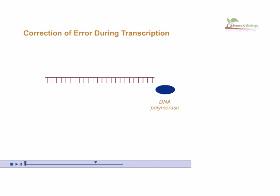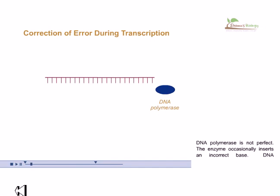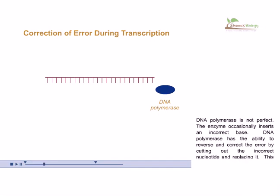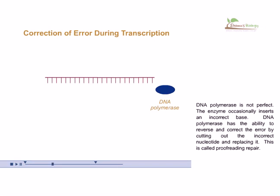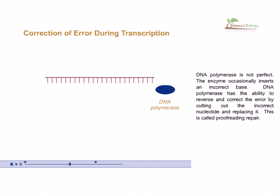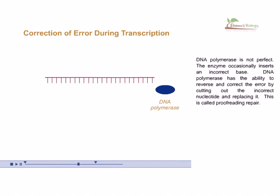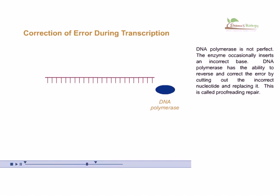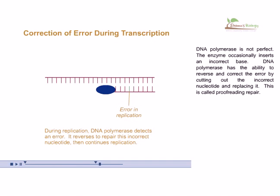In this video we will be talking about DNA repair machineries, from the proofreading activity of polymerase towards the mismatch repair and the SOS repair system. DNA polymerase is not perfect — the enzyme occasionally inserts an incorrect base. DNA polymerase has the ability to reverse and correct errors by cutting out the incorrect nucleotide and replacing it with a new functional nucleotide. This is called the proofreading activity of DNA polymerase.